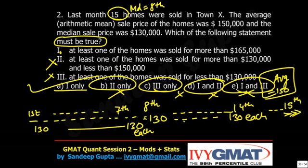To adjust the arithmetic average, how many values need to be changed compulsorily — only one, or more than one? For whatever set, if you want to change the mean, with one value change you can achieve whatever mean you want. I'm specifying arithmetic mean because this property doesn't apply to other types of means, but those aren't tested on the GMAT anyway.